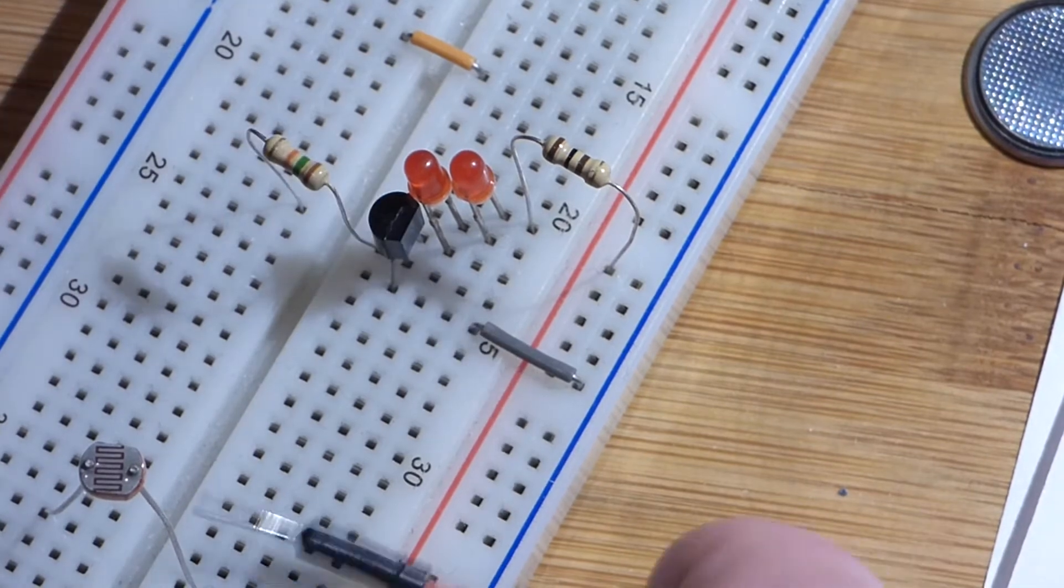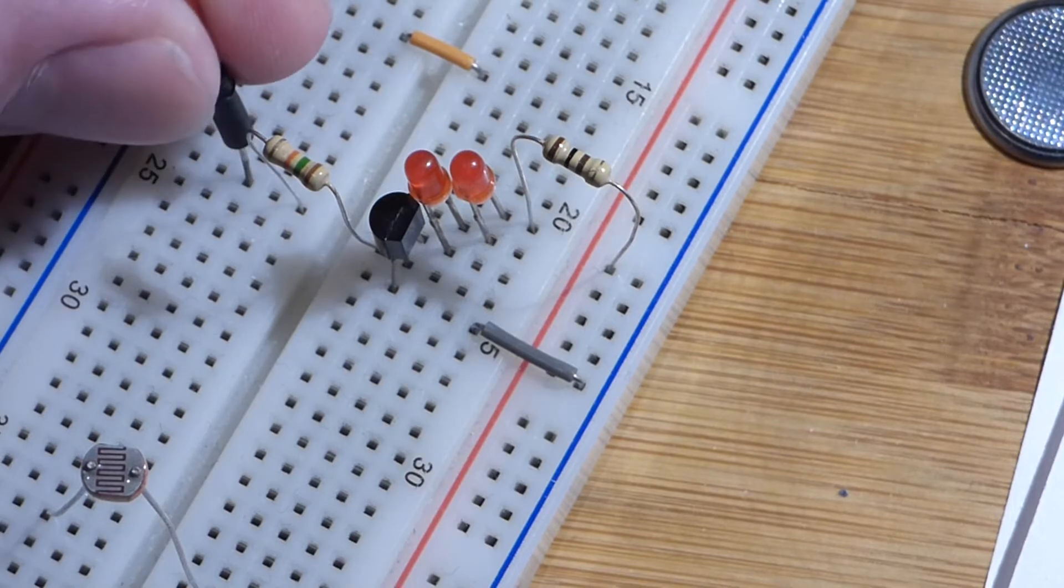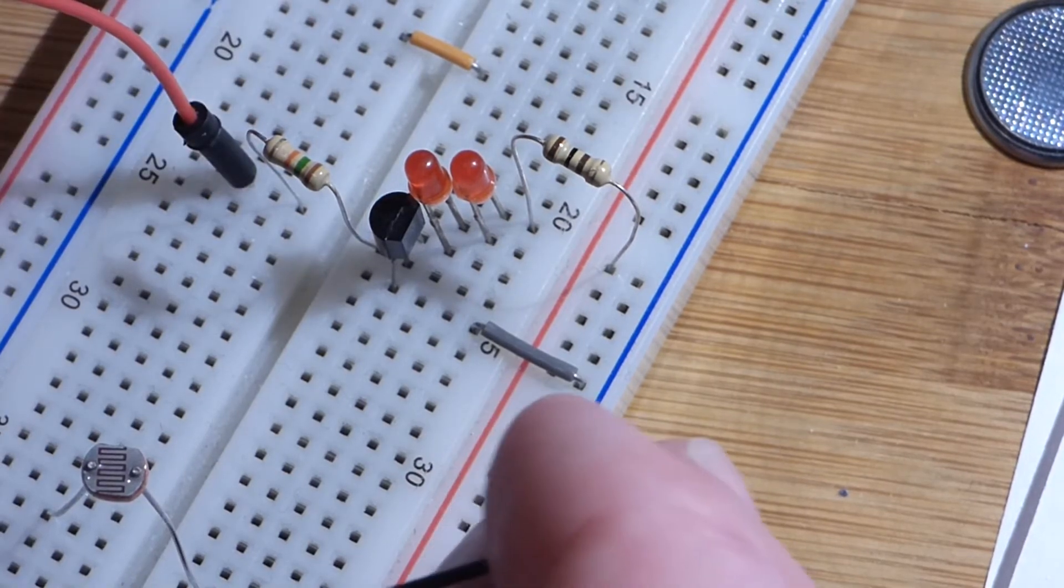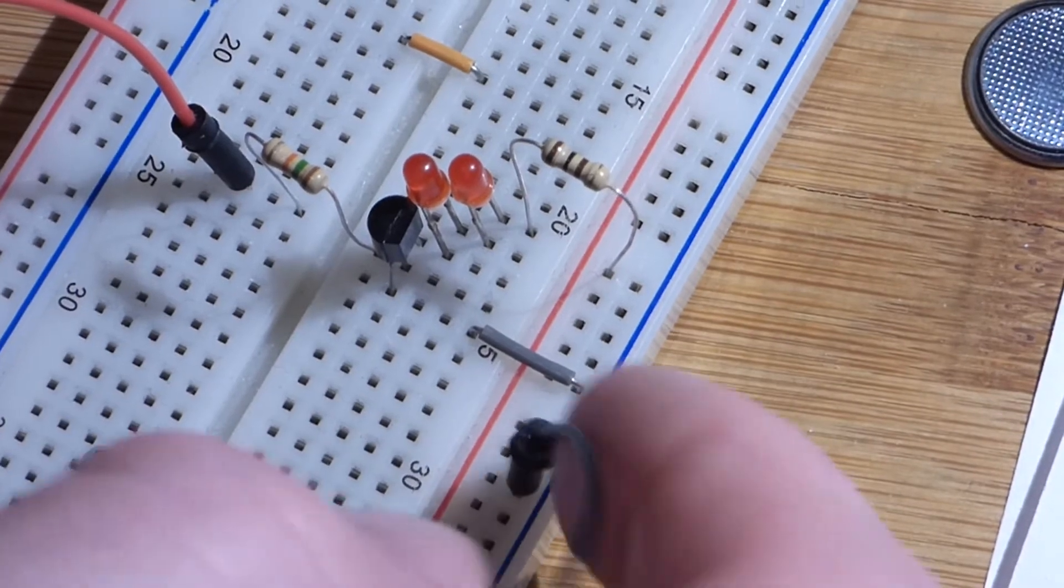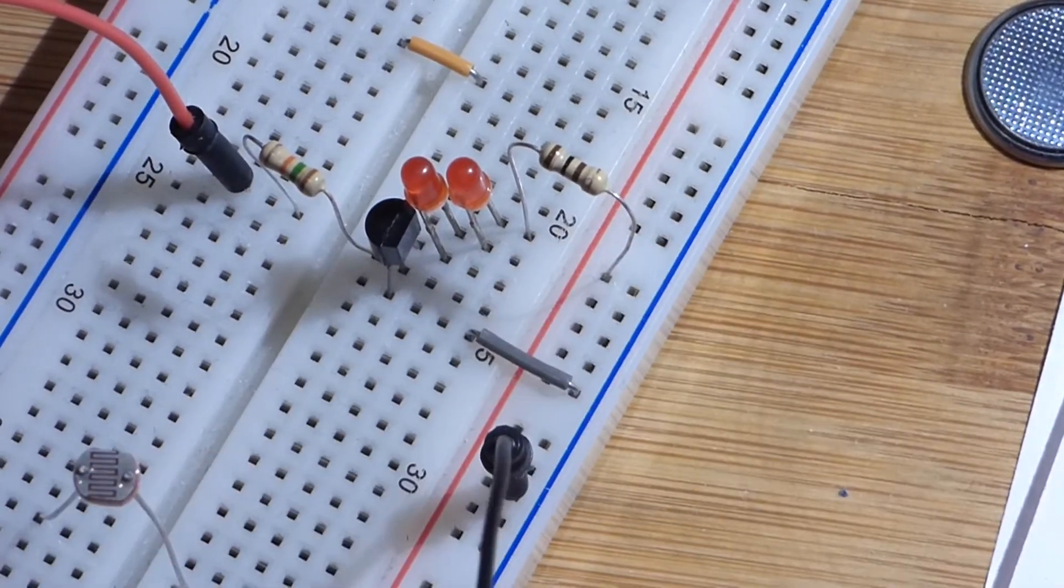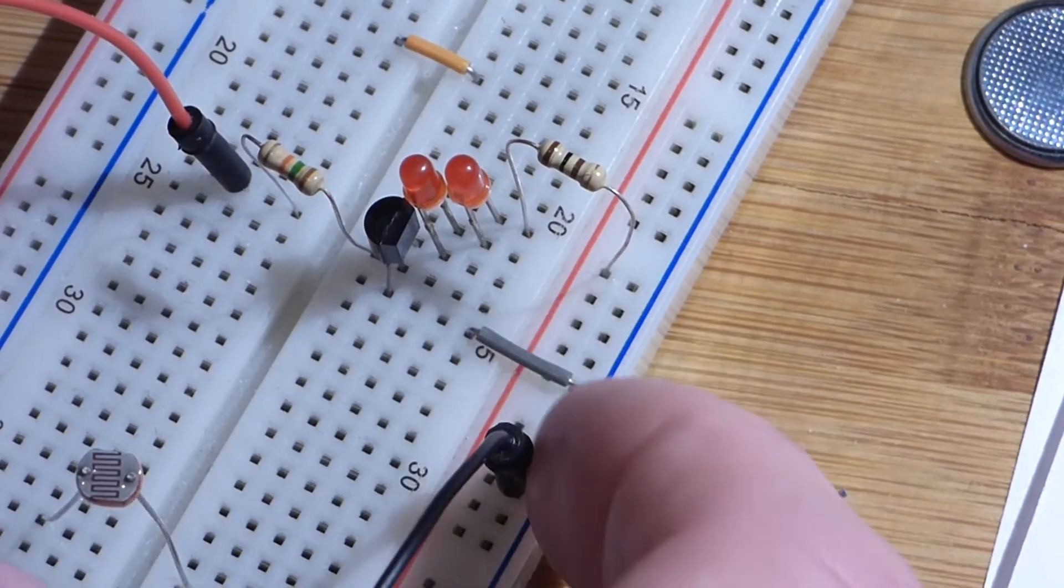Before we do that, I will add a couple wires, because we're going to use these to connect the battery again. So red to positive there, black to negative, and we can put it to the ground or right to the emitter of the transistor. It doesn't matter. This is all one connection point because of this jumper there.